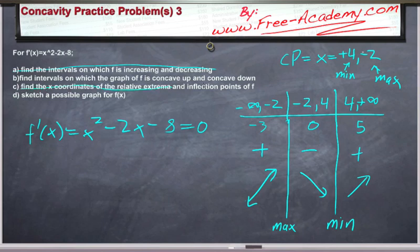We need concave up, concave down, and inflection points. So we're going to need the second derivative for that. This is going to be 2x minus 2. And we'll set that equal to 0 as well and solve. So this will be x equals 1. We have the possibility for an inflection point.